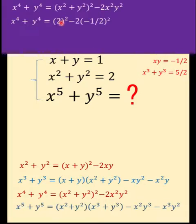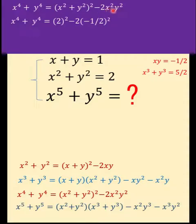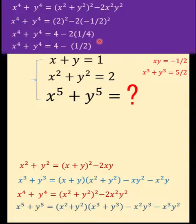Next, let's go to x to the fourth plus y to the fourth. Substituting 2 for x squared plus y squared, copying the exponent, copying minus 2, then x squared y squared is just the quantity xy all raised to the second power. We know that xy equals negative one half, so this becomes x to the fourth plus y to the fourth equals seven halves.